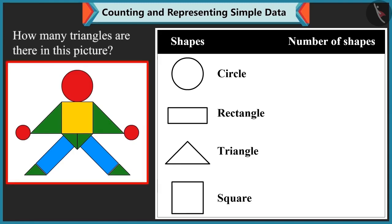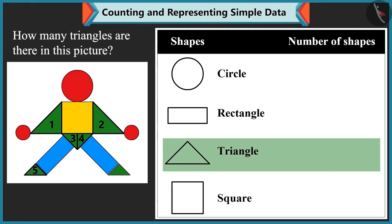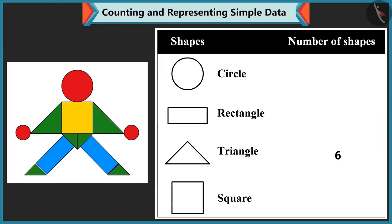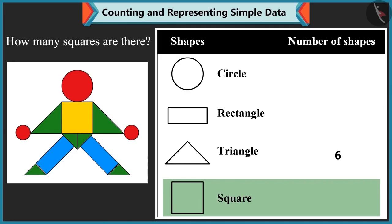Mummy asks how many triangles are in the picture. Bubbly counts: 1, 2, 3, 4, 5 and 6 — there are 6 triangles. Well done! Then Mummy asks how many squares there are. Bubbly starts counting 1, 2, 3, but Mummy corrects her: there is only one square.